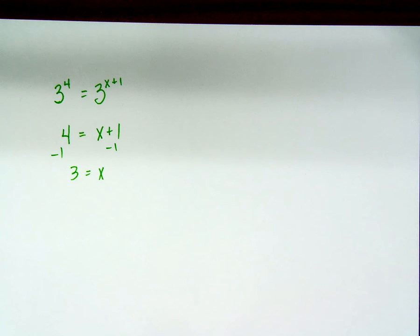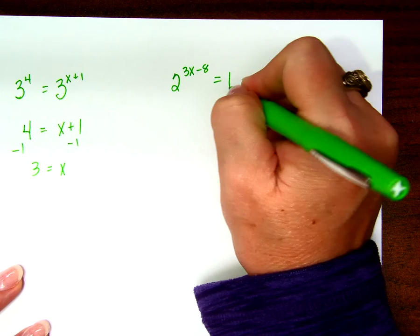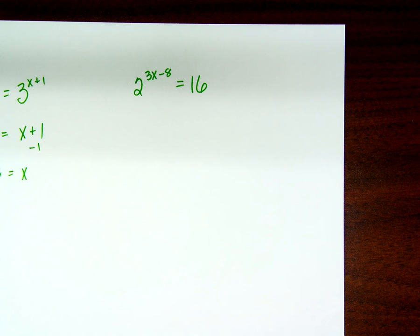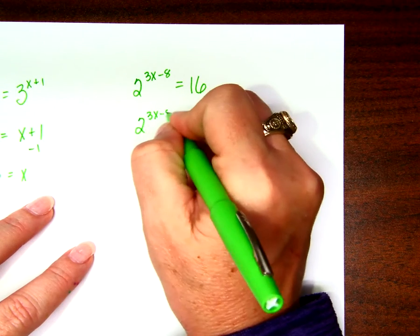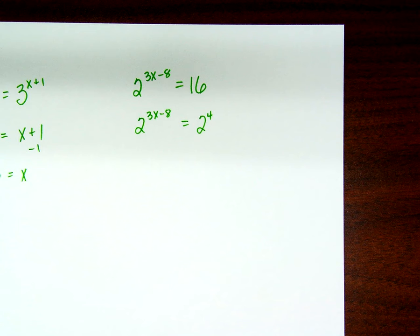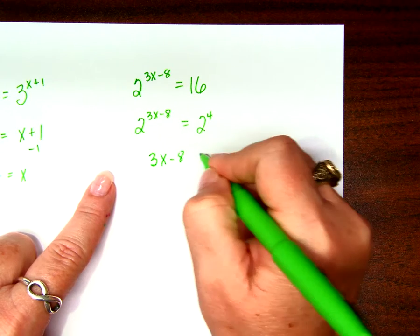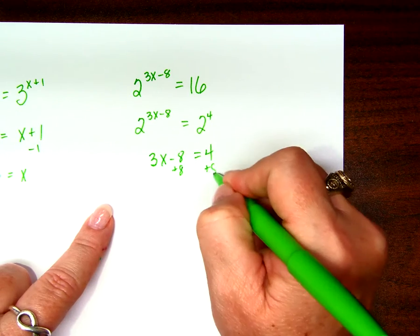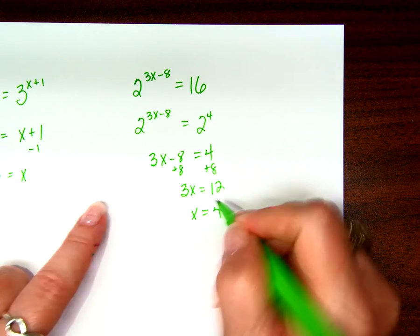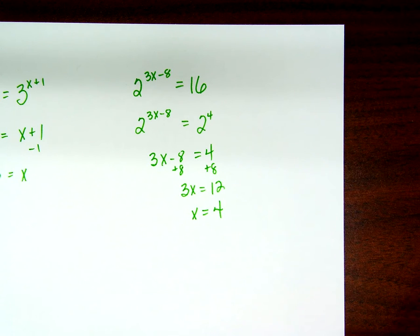So the problem comes when the equation looks like this: 2 to the 3x minus 8 equals 16. Those bases are not the same, are they? Except, couldn't I make them the same? Couldn't I say 2 to the 3x minus 8 equals 2 to the fourth? Don't I know that 16 is 2 to the fourth? I'm just using my brain or my calculator. Now the bases are the same, and I have 3x minus 8 equals 4. I solve that and x equals 4. Plugging it in: 12 minus 8 is 4, 2 to the fourth is 16. That's correct.